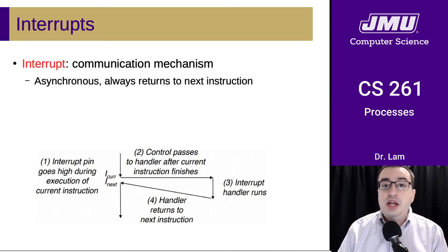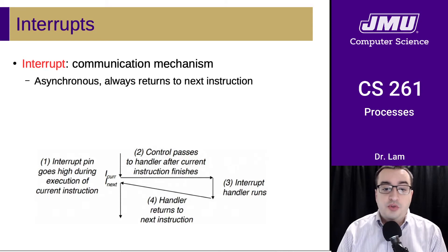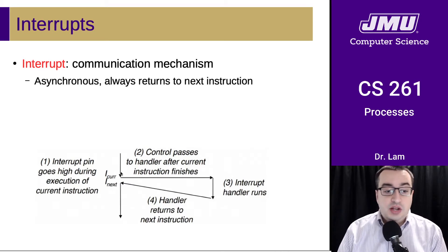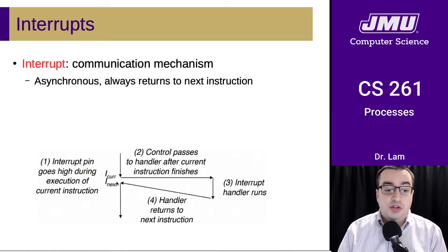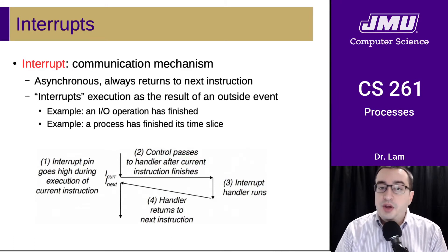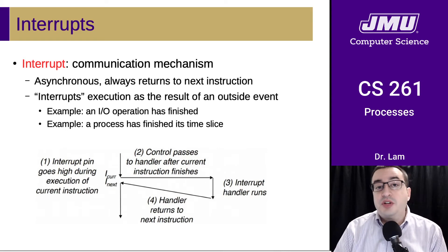The first type of exception is an interrupt. This is basically a communication mechanism — asynchronous, and it always returns to the next instruction. This is usually the result of some hardware event, such as an I/O operation finishing, a keyboard button being pressed, or a mouse click. A hardware event sets the interrupt pin high during execution of an instruction. When that instruction is done, control passes to the interrupt handler, which does whatever is needed, and then returns control to the next instruction. We'll also see how this is used by the operating system to switch between processes once a process has finished its time slice — a portion of time allotted to it on the CPU.